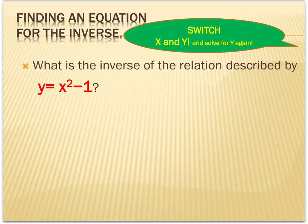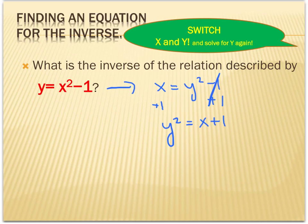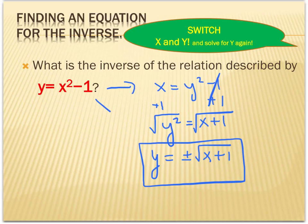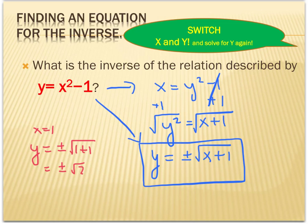In this example we do exactly the same thing: switch the x and y values, then solve for y. Remember, to get rid of a square we must take the square root, and when taking the square root we have to put plus or minus. So this is the inverse of the original function. For every x value, will I have only one y value? If I plug in x = 1, I get y = ±√(1+1) = ±√2, which gives two answers. So the inverse here is not a function.